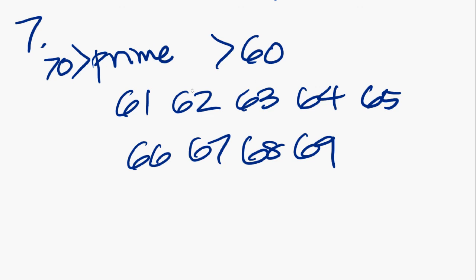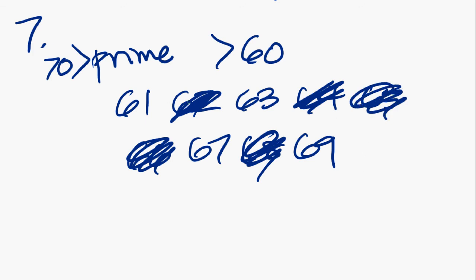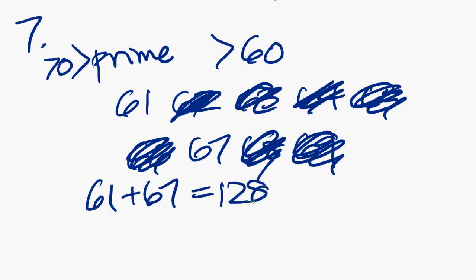So right off the bat, we see the even numbers. All of these can be divided by two, so let's get rid of them. So it's not 62, not 64, not 66, not 68. We know that anything that ends in a 5 can be divided by 5, so it's not that. So we're down here, 63, what goes into 63? 7 times 9 is 63, so we know that's not it either. 69 can be divided by 3, so it's not that. So it looks like we're left with 61 and 67. Let's add them together. 8, 12, 128.